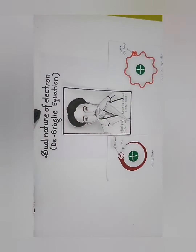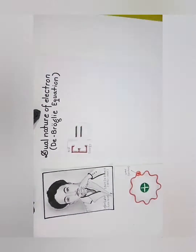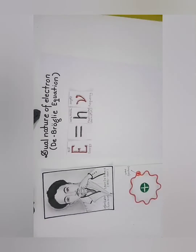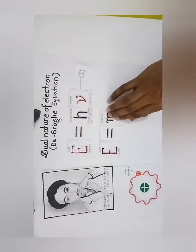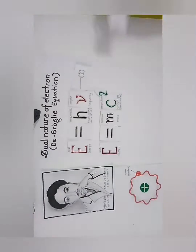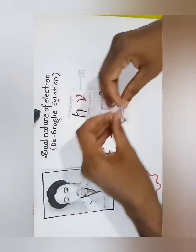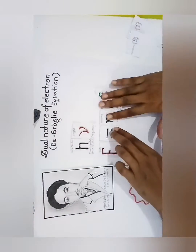Let us consider a photon to be a wave of frequency ν. Its energy is given by Planck's equation: E = hν (Equation 1). If we consider it as a particle of mass M, its energy is given by Einstein's mass-energy equation: E = Mc² (Equation 2).